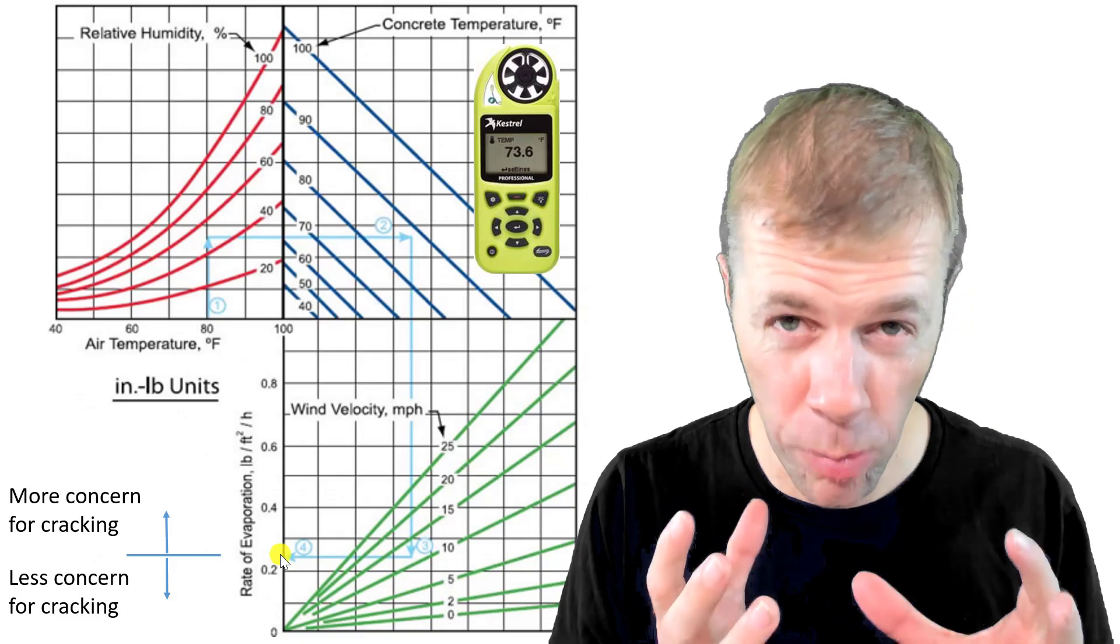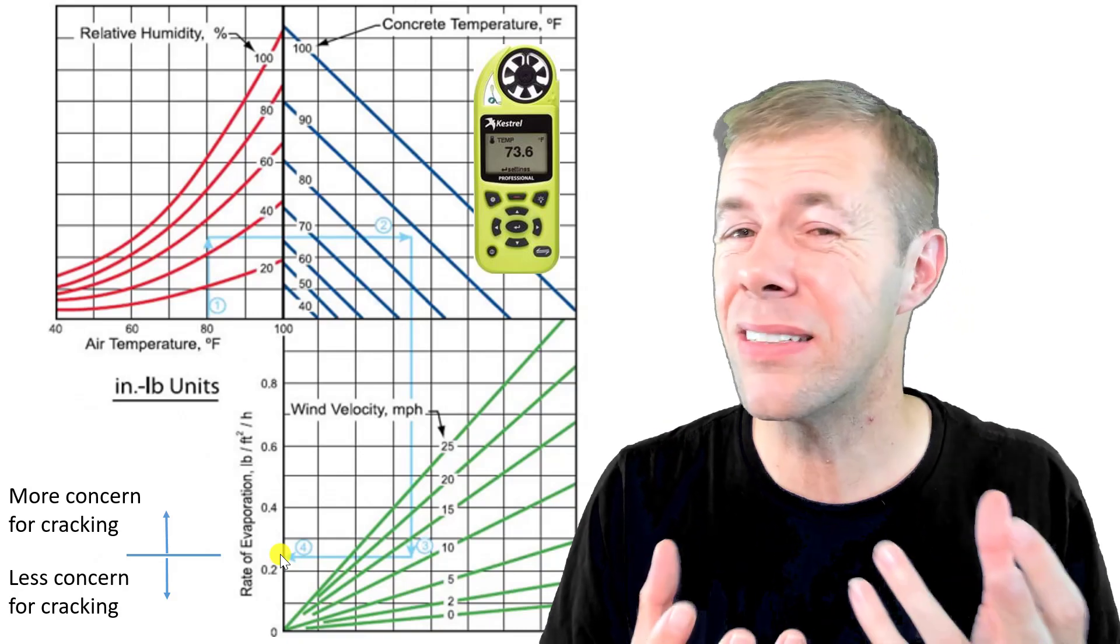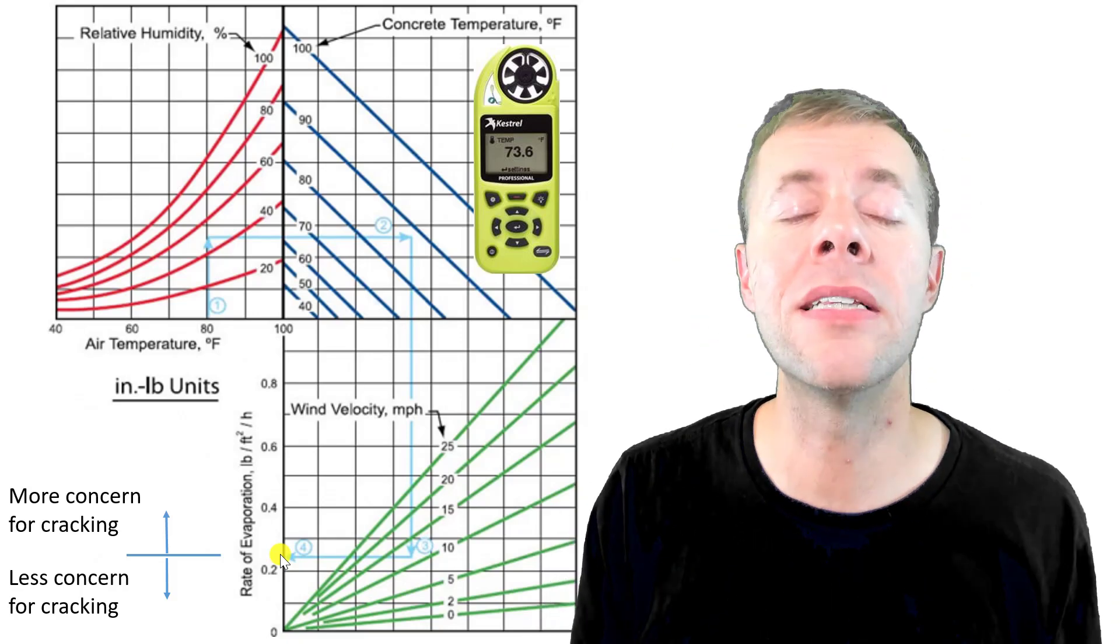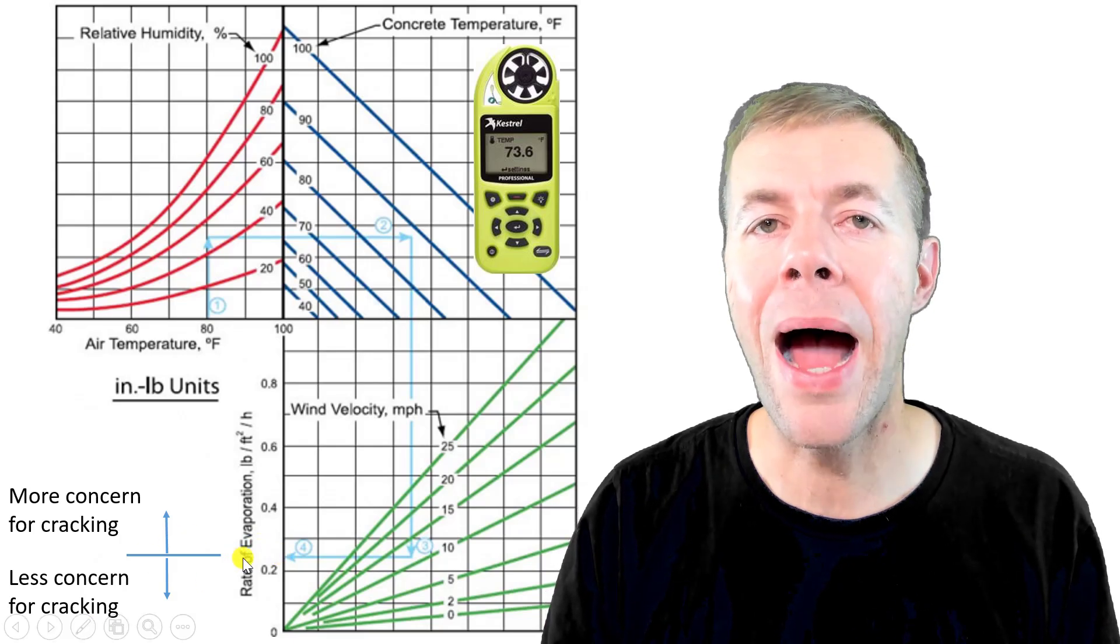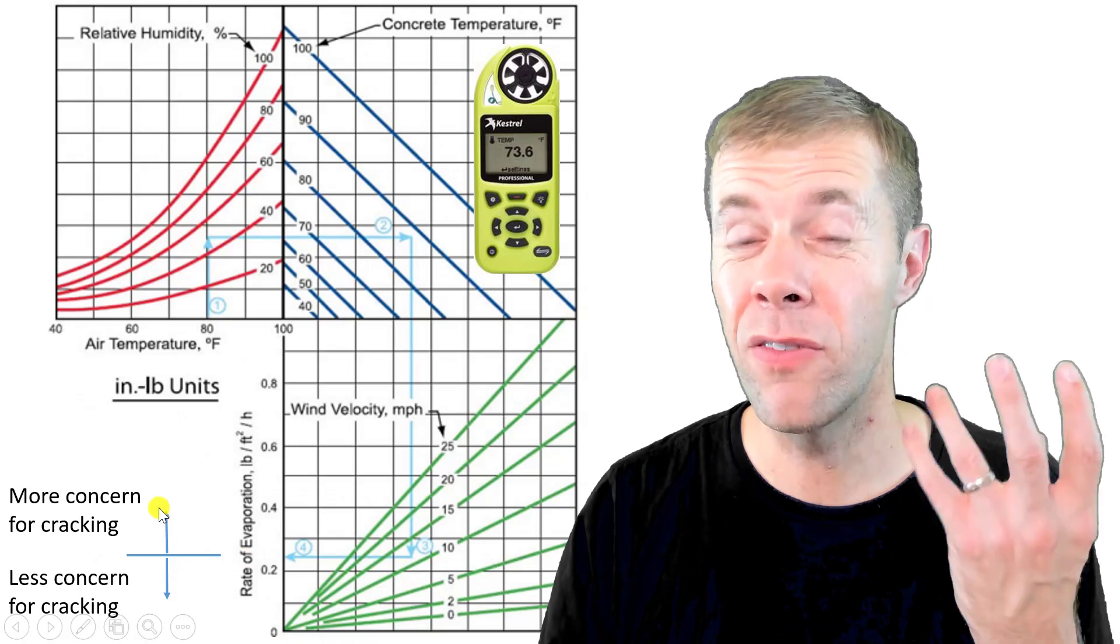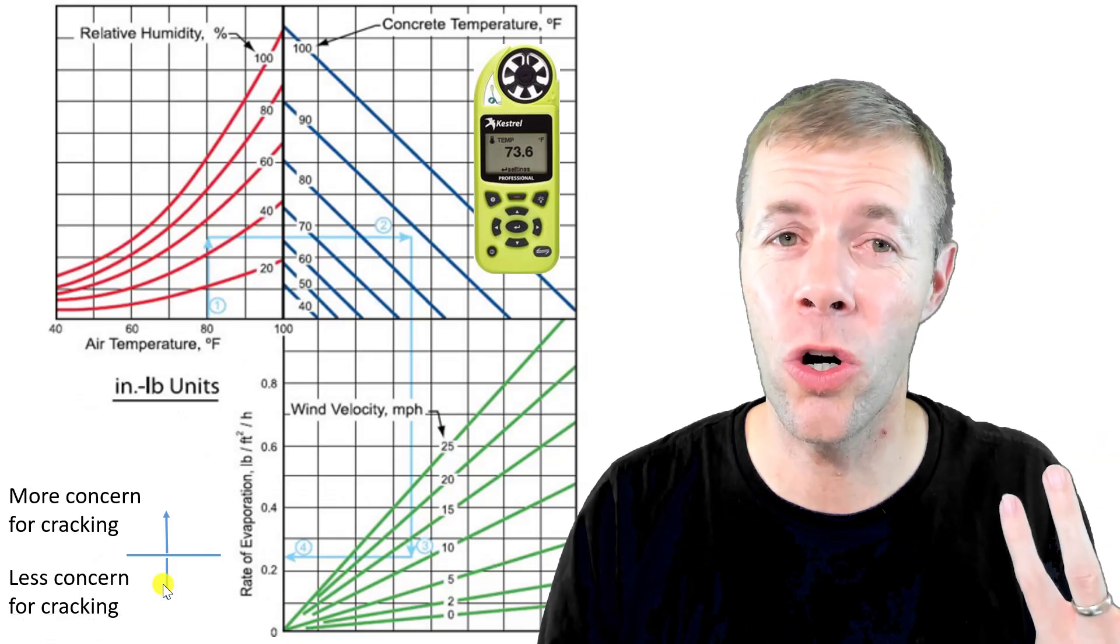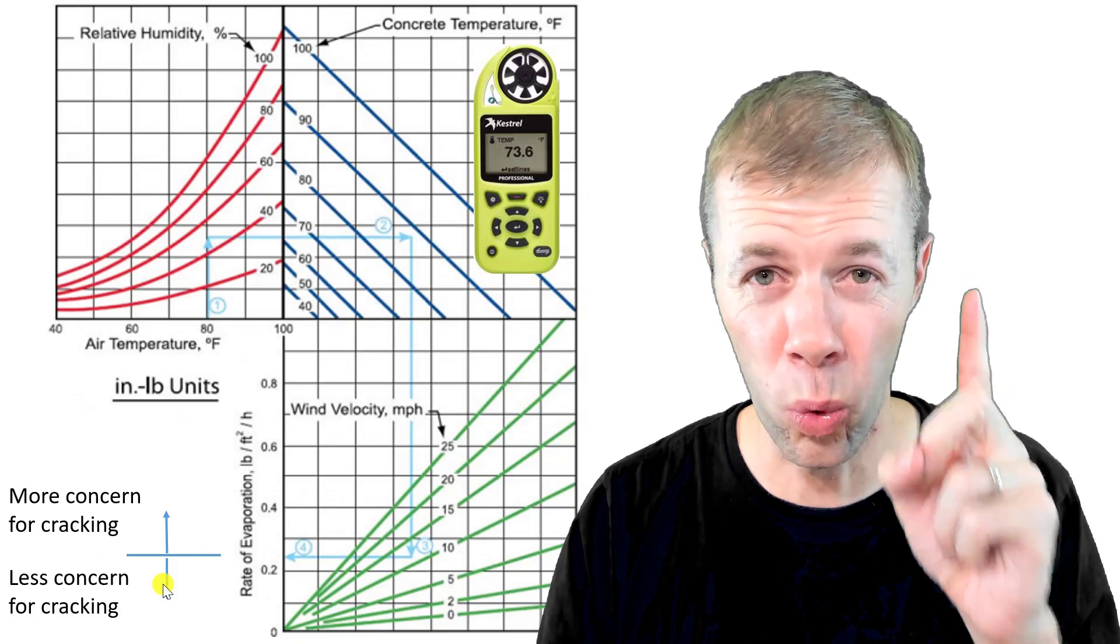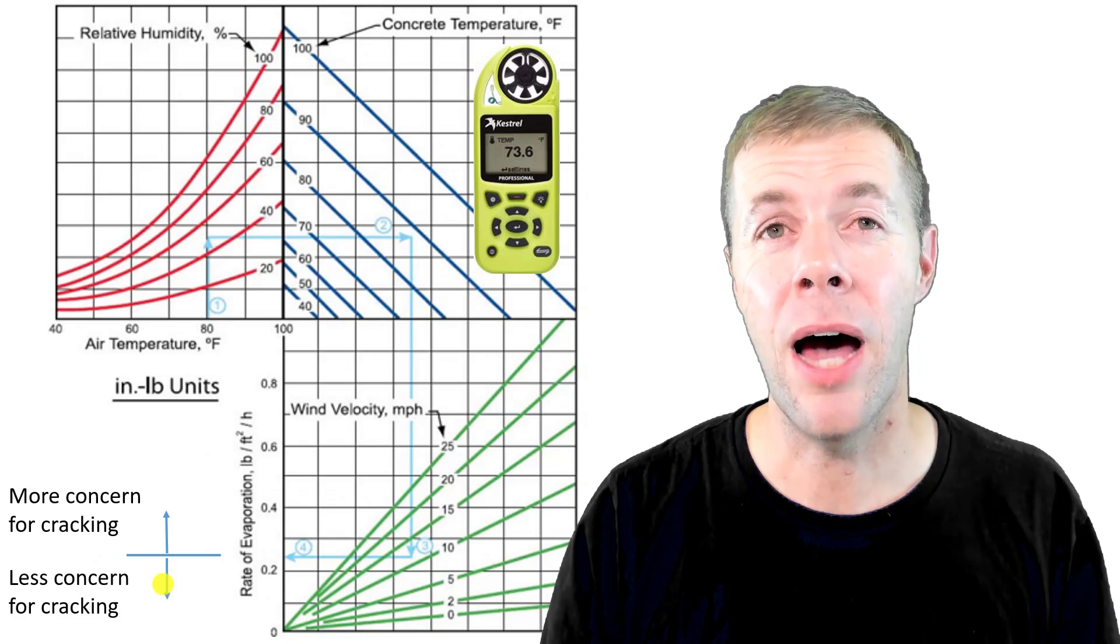Our concrete forefathers and foremothers got together and drew a line in the rate of evaporation sand. There's lots of people that argue about this line and whether it really applies for every concrete mixture. No, but they drew a line in the sand. They said, when you have about 0.25 pounds per square foot per hour or more, you have a concern for cracking. If you have less than that, you have less of a concern for cracking. Notice the lawyer-like wording here—less of a concern for cracking, because cracking still may happen.